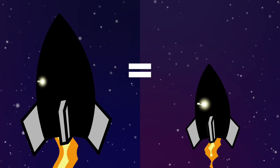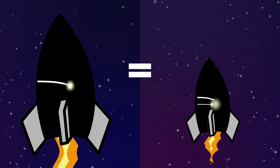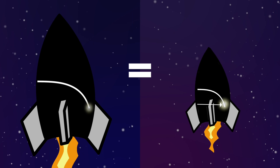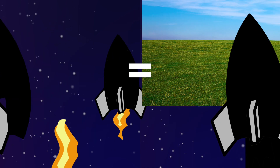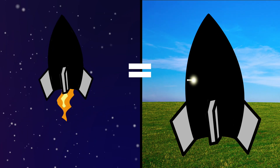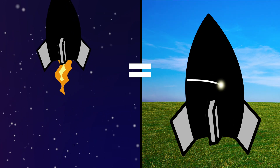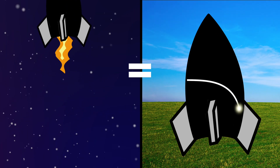And since we've established that the accelerating elevator and the stationary one are physically identical, then gravity has the same effect — it bends light.